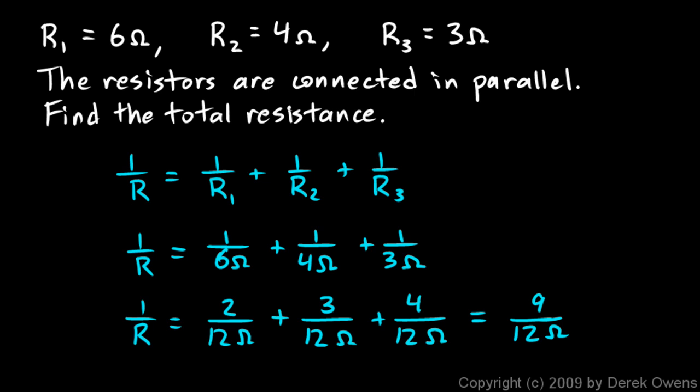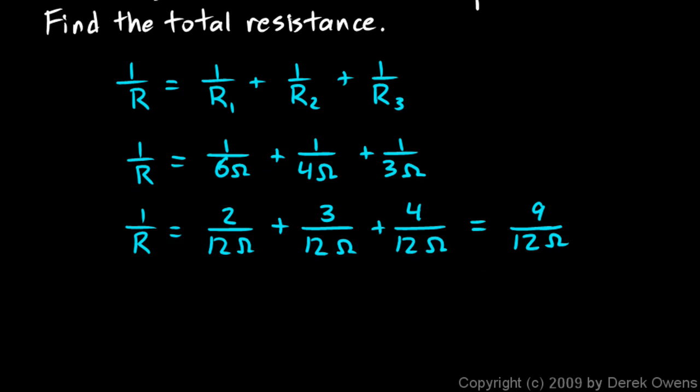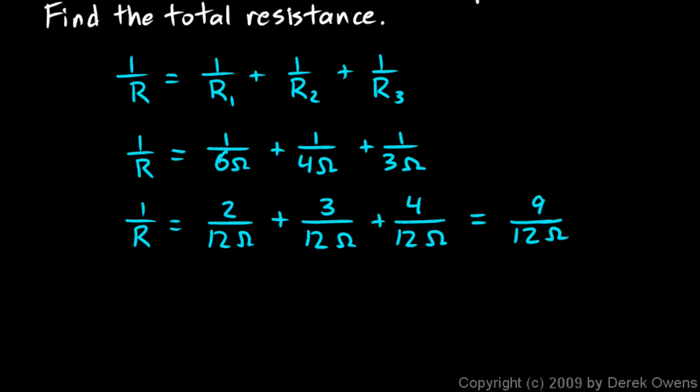Now don't make the mistake of thinking that you're done. Don't say okay, 9/12, that's my answer, 9/12 of an ohm. That's not right. What we just calculated right here was 1 over R, and notice the ohms are down here in the denominator. If 1 over R is equal to 9 over 12 ohms, I'm going to reciprocate each side.